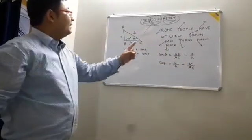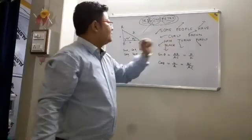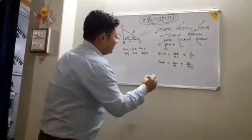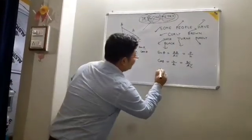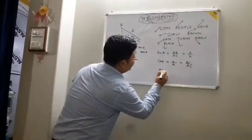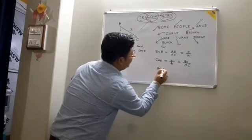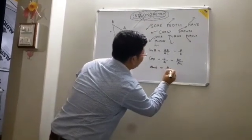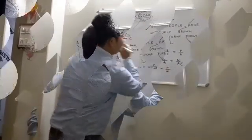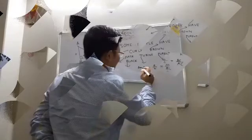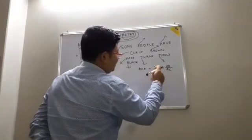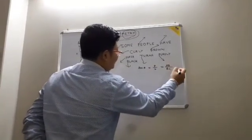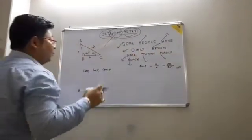'T' stands for tan theta. Tan theta will be equal to perpendicular by base — that is AB by BC. Got it?